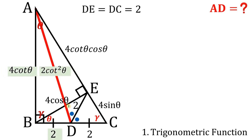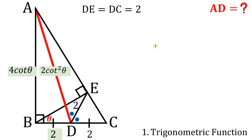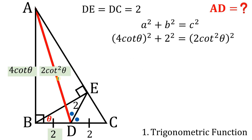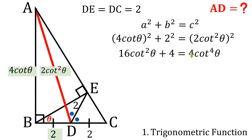Using right triangle BAD, we apply the Pythagorean theorem with AB equals 4 cotangent theta, BD equals 2, and AD equals 2 cotangent squared theta. This gives: (4 cotangent theta)² plus 2² equals (2 cotangent² theta)², which simplifies to 16t plus 4 equals 4t squared, where t equals cotangent squared theta.